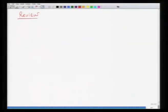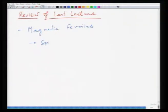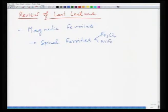In the last lecture we talked about magnetic ferrites. As the name suggests, since the name is magnetic ferrite, most of these are iron-containing compounds, and that comes from the magnetic property of iron. The first of these happens to be spinel ferrites. These spinel ferrites we discussed were varieties of Fe₃O₄, NiFe₂O₄, ZnFe₂O₄, etcetera.